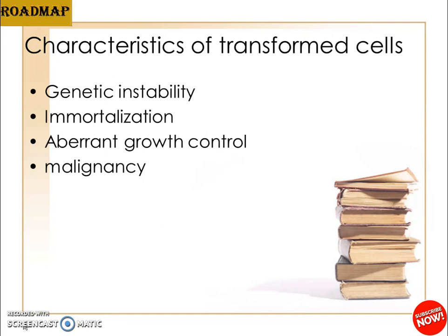Cell lines in culture are very prone to genetic instability. Most normal finite cell lines are usually genetically stable, but cell lines from other species like mouse are genetically unstable and can easily transform. Continuous cell lines derived from tumors of all species are unstable. Genetic variations in cultured cells occur due to the high rate of spontaneous mutations in vitro caused by rapid cell proliferation, and mutant cells are not normally eliminated from culture.